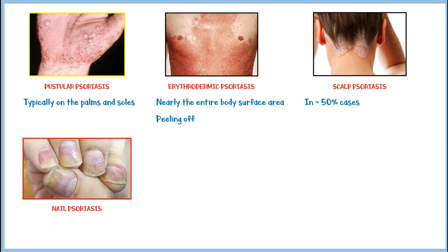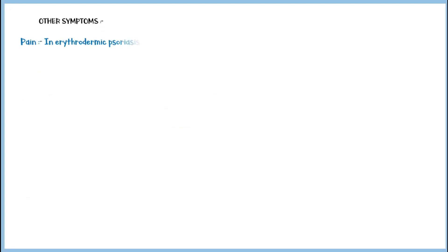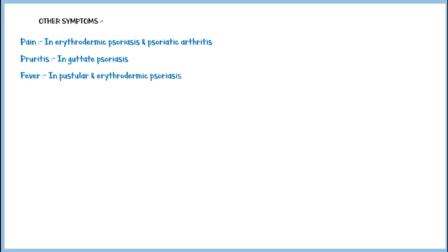And finally, nail psoriasis occurs in the tips of the fingernails. Some other symptoms associated with psoriasis include pain, especially in erythrodermic psoriasis and psoriatic arthritis; pruritus in guttate psoriasis; fever in pustular and erythrodermic psoriasis; joint pain without any visible skin findings in psoriatic arthritis; and conjunctivitis.